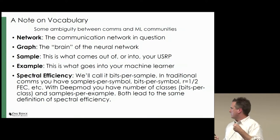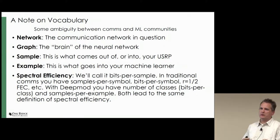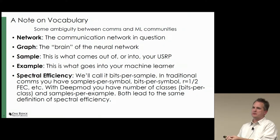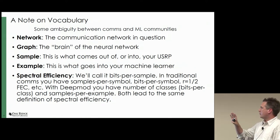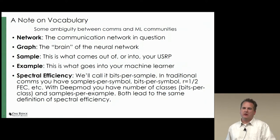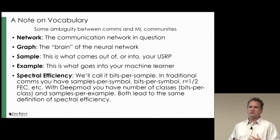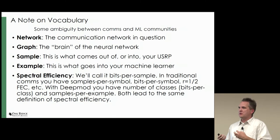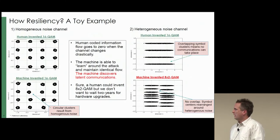For spectral efficiency, we'll call that bits per sample. For digital comms people, you have samples per symbol, bits per sample, error correcting codes, modulation — all boiling down to bits per sample, which tells you how much information you're getting across the channel depending on your sample rate. With DeepMod, we'll have bits per class and samples per example, but the dimensional analysis still gives you bits per sample. We're not messing with Shannon — we're still talking about spectral efficiency.